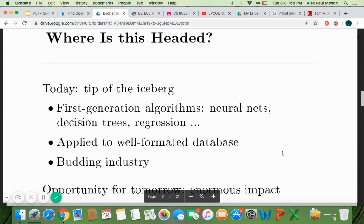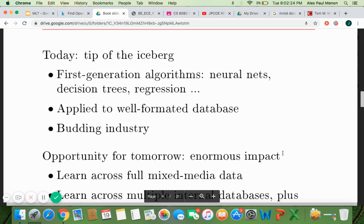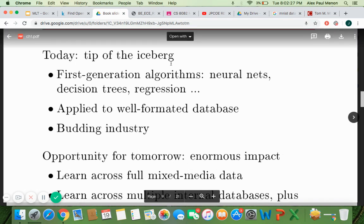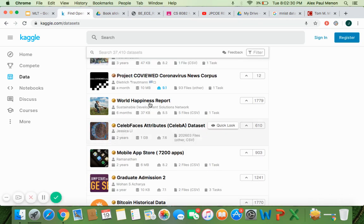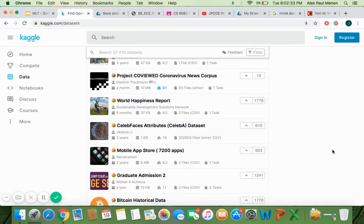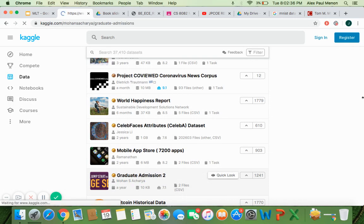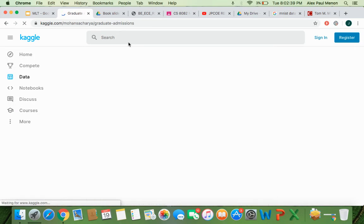So where is this all heading? So we should understand that today the machine learning, whatever applications we are doing is only the tip of the iceberg. We have a lot of things to be done. So the first generation algorithms which are there are getting more matured and they are getting into a data driven based decision making due to machine learning. So we have a lot of databases that are being created as I showed you. Kaggle has got a lot of data sets. So these are all different data sets that are available and from this they are trying to predict.